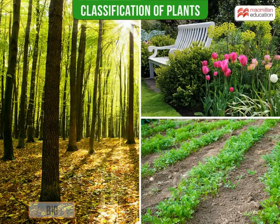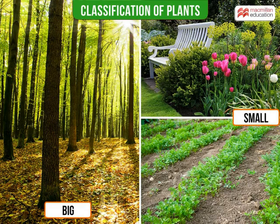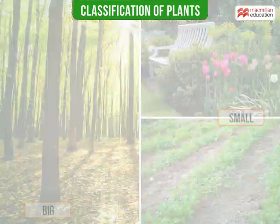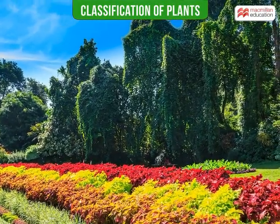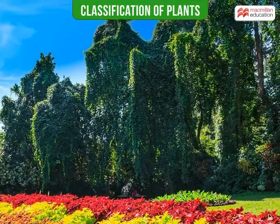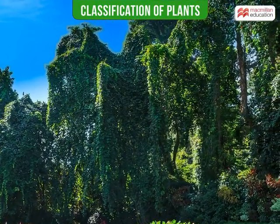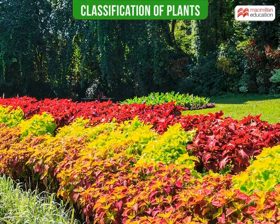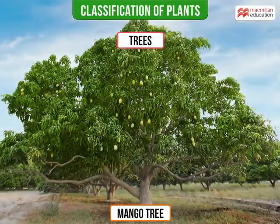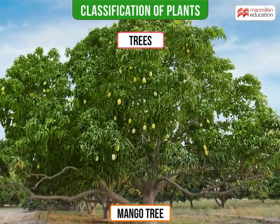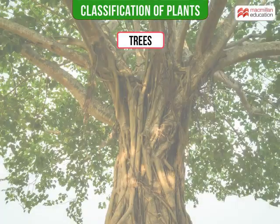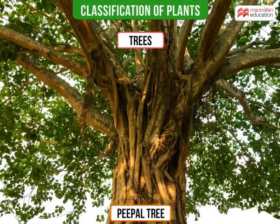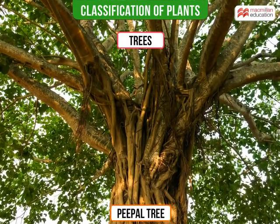While there are many ways to study plant classification, one way is to group them based on their sizes. We see a lot of plants around us. Some plants are big and strong, some plants are small and weak. Trees are big plants. They are quite strong.